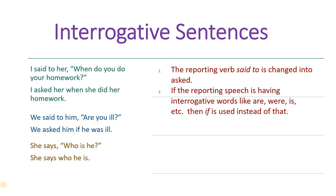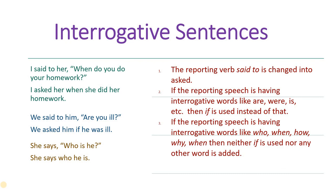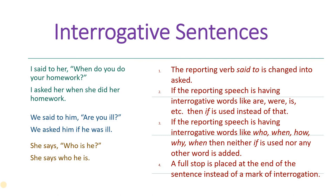The reporting verb 'said' is changed to 'asked.' If the reported speech has an auxiliary interrogative like are, where, were, is, etc., then 'if' is used instead of 'that.' So in the second statement, 'we asked him if he was ill' — when auxiliaries are used, we do not use 'that' after the reporting verb but we use 'if.' If the reported speech has interrogative words like who, when, how, where, why, then neither 'if' nor any other word is added — it is a direct statement. A full stop should be placed at the end instead of a question mark. This is the total transformation when direct speech is interrogative and has to be changed to indirect.